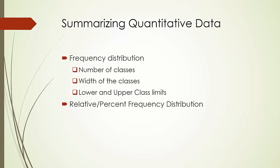Approximately, the class width can be determined by the difference between the largest data value and the smallest data value divided by the number of classes. Lastly, we determine the lower and upper class limits. The lower class limit identifies the smallest possible data value assigned to the class, and the upper class limit identifies the largest possible value assigned to the class. It is important that class limits are chosen such that all classes are mutually exclusive — that is, each data point belongs to one and only one class. Sometimes people want to know the midpoint of a class, which is simply the value halfway between the lower and upper class limits. Relative and percent frequency distributions are defined in the same manner as for categorical data.